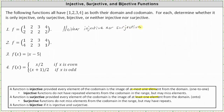Now looking at number two, notice all the elements from the codomain do appear in the range, and therefore the function is surjective. Surjective functions do not miss elements from the codomain in the range but may have repeats. We don't have repeats, but every element in the codomain is in the range. The given function is also injective because we do not have repeated elements from the codomain in the range. Since number two is both surjective and injective, it is bijective.